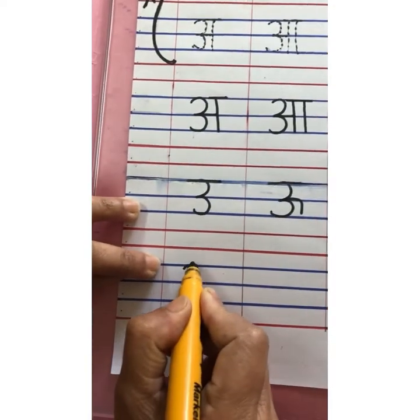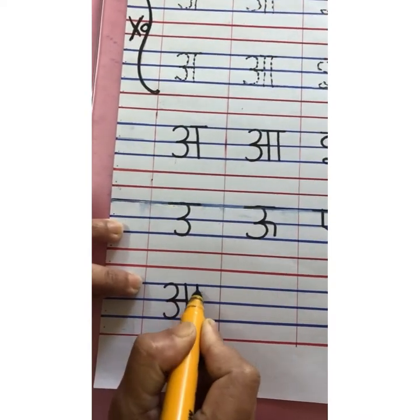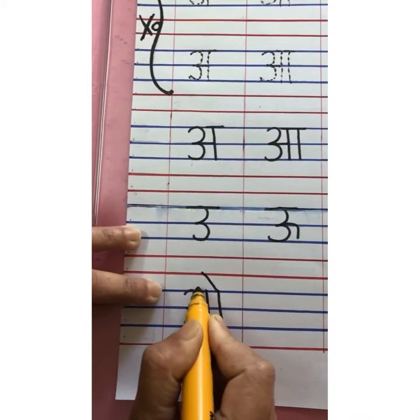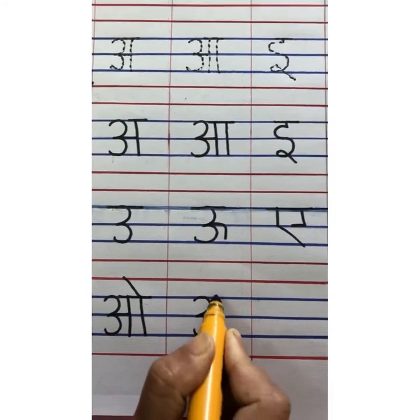Then next swar is o. Write o. Then comes ao. Then write ao.